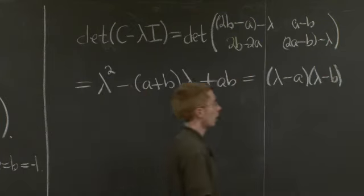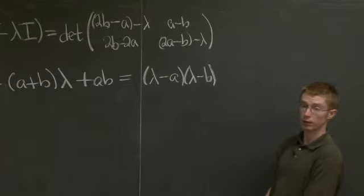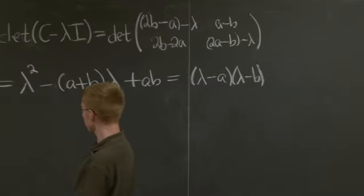And this will factor as lambda minus A times lambda minus B. Good. So our eigenvalues are just A and B. Now we need to find our eigenvectors. So how do we do that?